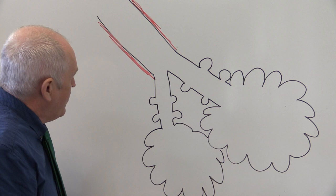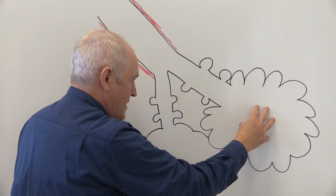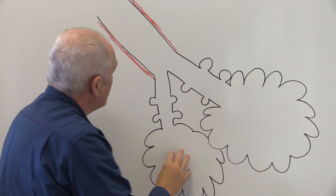In pneumonia there is actual infection at the level of the alveoli in the lung tissue. In emphysema there is damage to the walls of the alveoli.